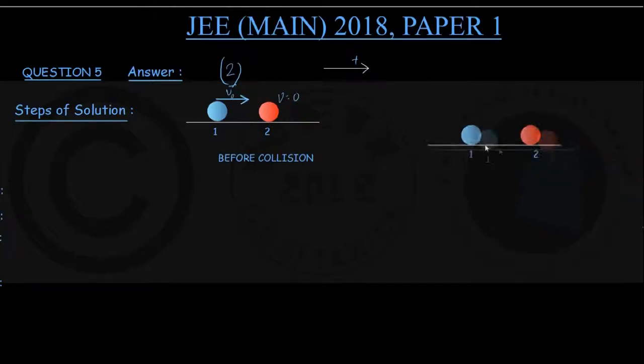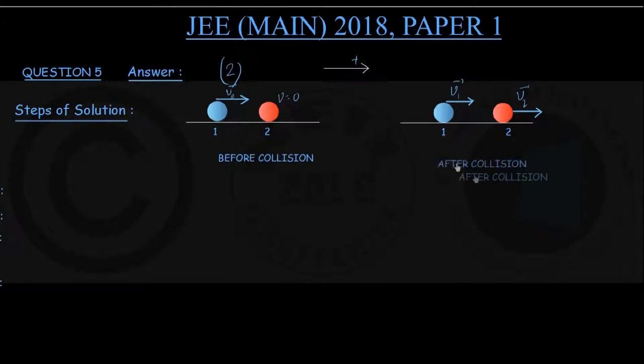After the collision, we assume that particle one is continuing to move towards right with a new velocity of v1, and particle number 2 starts moving with a velocity of v2. This schematic figure is just a representative figure, even if directions of motion of these two particles are different from what we have drawn.